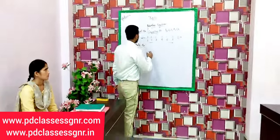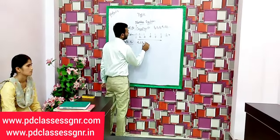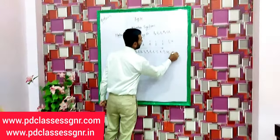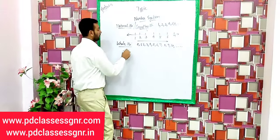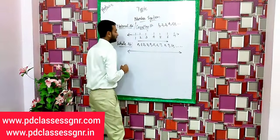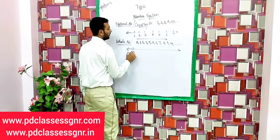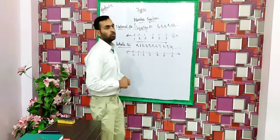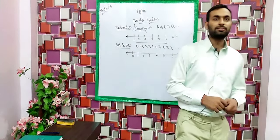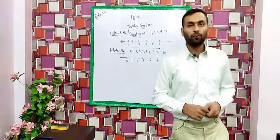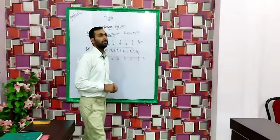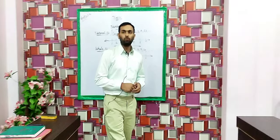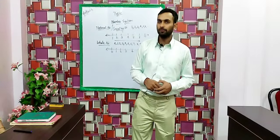Whole numbers start with 0, 1, 2, 3, 4, 5, 6, 7, 8, 9, 10 and so on. We can also represent them on a number line, starting with 0 and heading towards the right side: 0, 1, 2. So to recap — natural numbers start with 1, 2, 3, 4, 5 and so on, while whole numbers start with 0, 1, 2, 3, 4, 5 and so on.